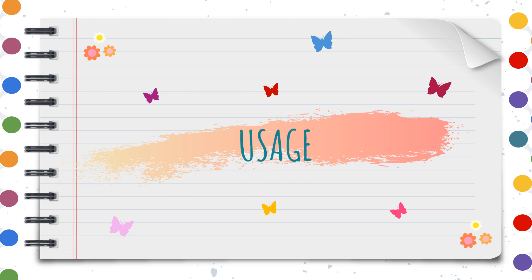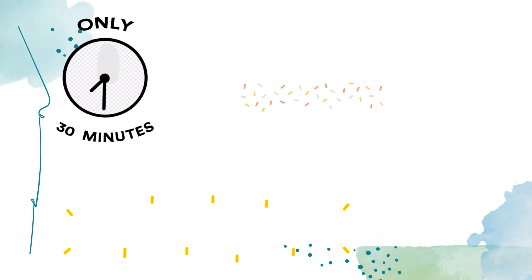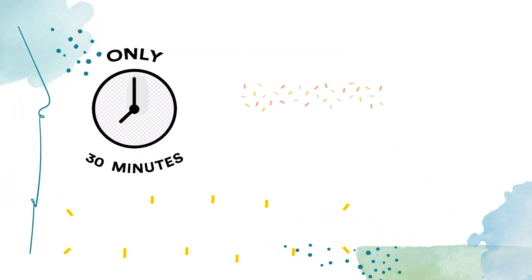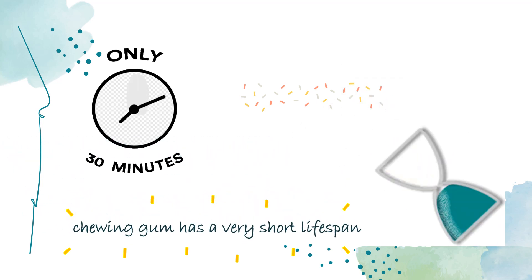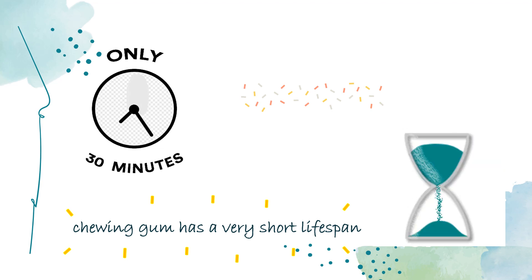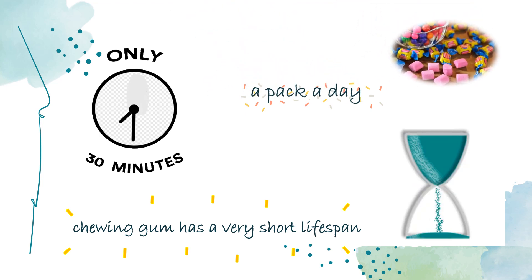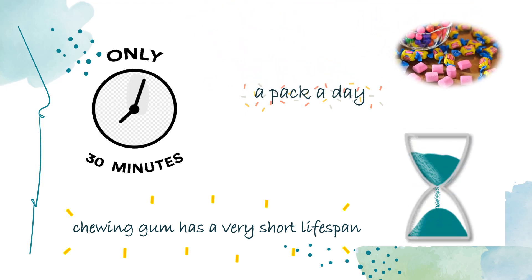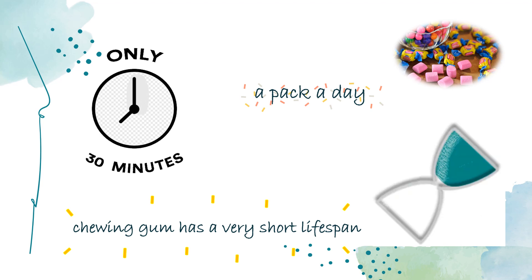Usage. Do you know chewing gum has a very short lifespan? People chew gum for 30 minutes on average before spitting it out. This half hour produces much less energy than what is expended during the production process. Chewing gum is short-lived and frequently tossed on the ground. People typically go through a pack a day, and annually 3.74 billion sticks of gum are produced.